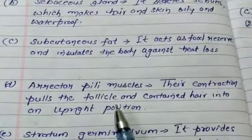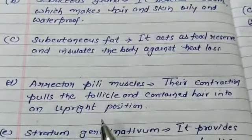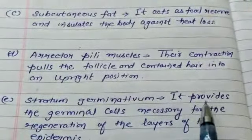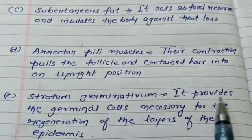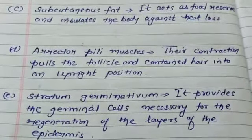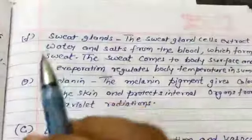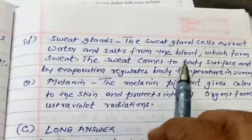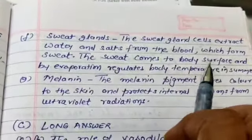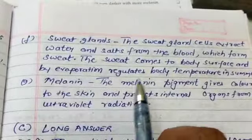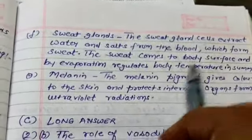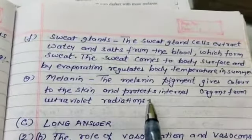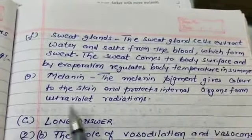Erector pili muscles — their contraction pulls the follicle and contained hair into an upright position. Stratum germinativum provides germinal cells necessary for the regeneration of the layers of the epidermis. Sweat gland cells extract water and salt from the blood which forms sweat; the sweat comes to the body surface and by evaporation regulates body temperature in summer. Melanin pigment gives color to the skin and protects internal organs from ultraviolet radiations.